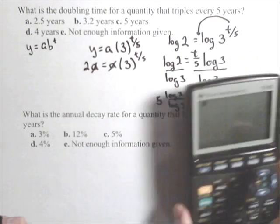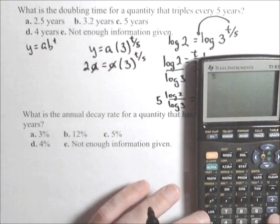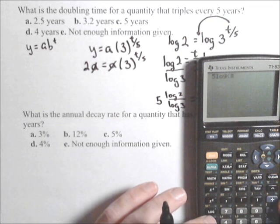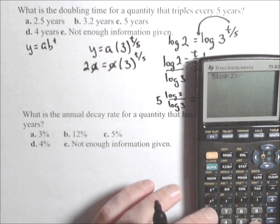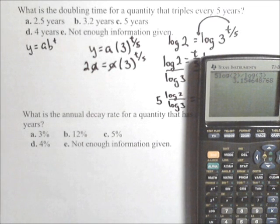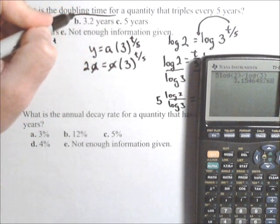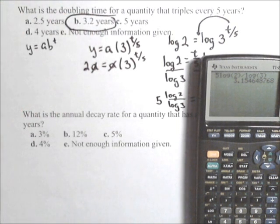Now, let's go ahead and see what that comes out to be. So, putting in my calculator, I have five log of two divided by log of three. And, I get roughly about 3.15 years, or at one decimal, 3.2 years.